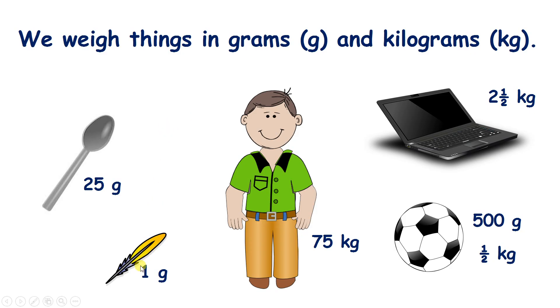So a feather is very light, it only weighs 1 gram. A spoon weighs about 25 grams, so you would need to hold 25 feathers to have the same weight as a spoon.